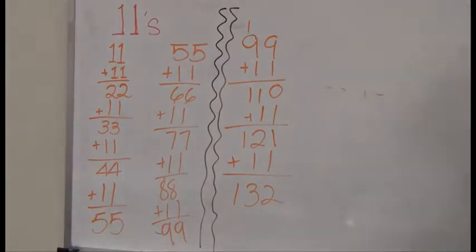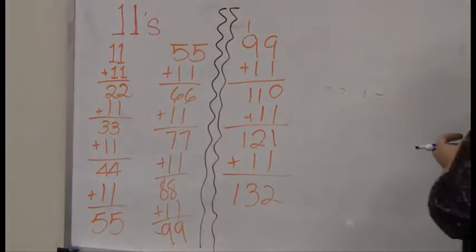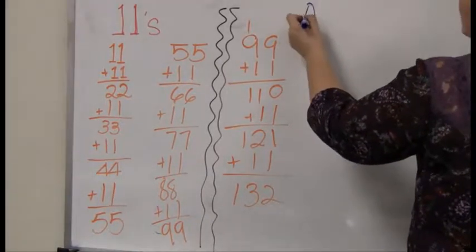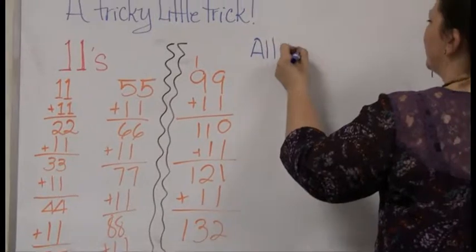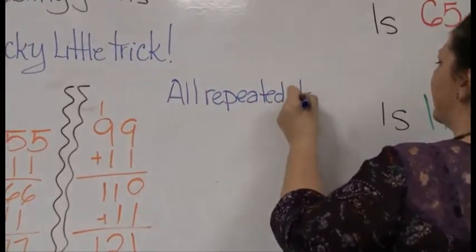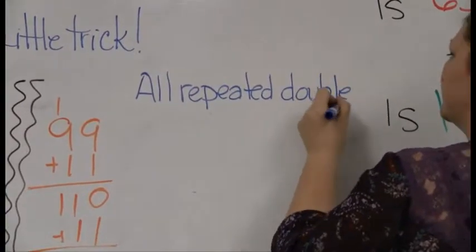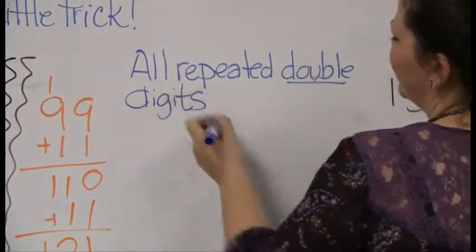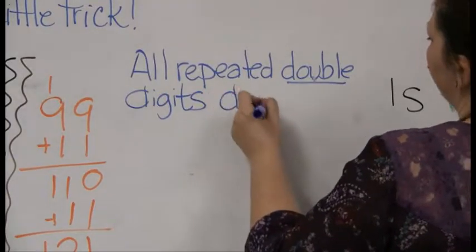And so let's go ahead and write up our rule. Our rule is that all repeated double digits, notice I said double, two-digit numbers, all repeated double digits divide by 11.